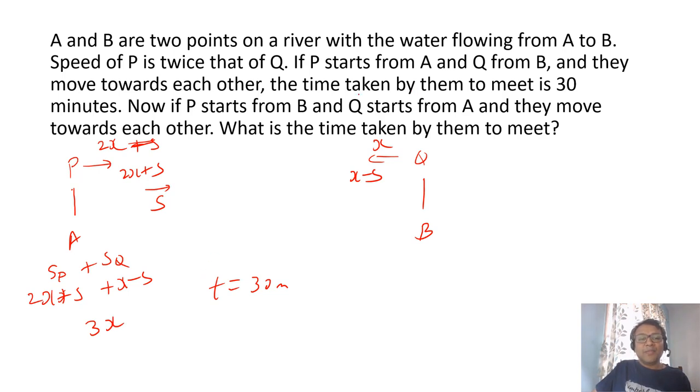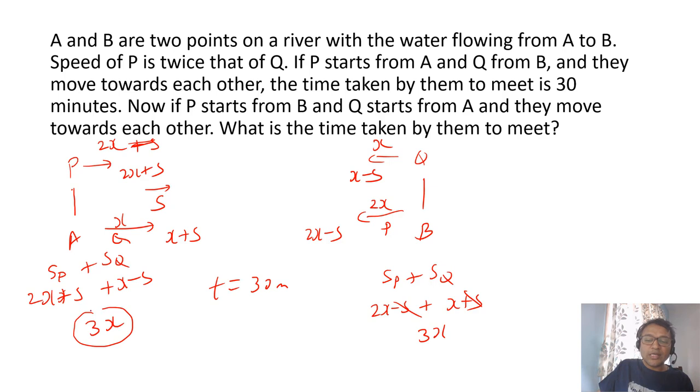Now they have said that P starts from B. So P starts from B in the second case and Q starts from A. The actual speed of Q will be x plus s. The actual speed of P will be 2x minus s. So again, the relative speed is speed of P plus speed of Q which is 2x minus s plus x plus s. Which again, s gets cancelled. You will get 3x. So the speed before also was 3x. After also was 3x, the relative speed.